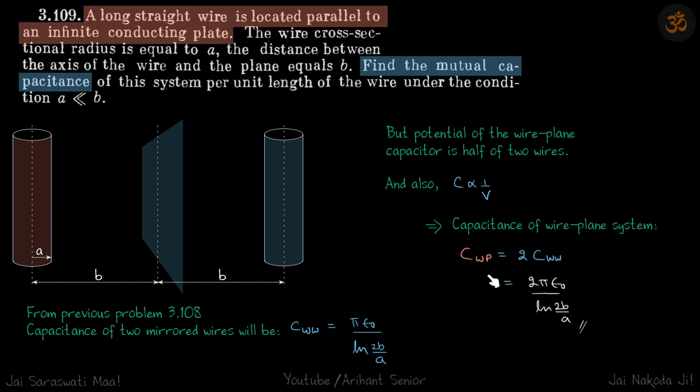You might be wondering, if we have given lambda here, from the mirror system it's understood that it will have minus lambda, but why should the plane have minus lambda? We have already done this before: whatever charge is on the conductor, the negative charge appears on the conducting plate.